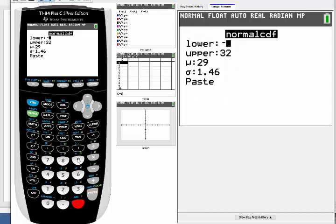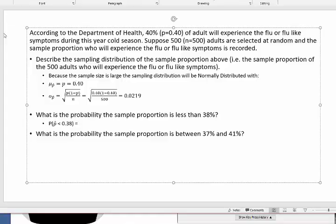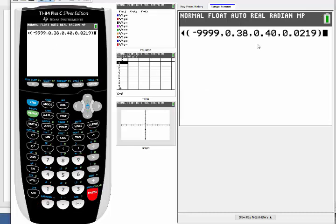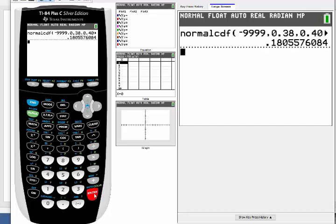So the lower here I'm going to put a ridiculous number like negative 9999. And then look back at the problem, I want it to go up to 0.38. The average here was 0.40. And the standard error was 0.0219. So if you have to plug this in by hand on the TI-83, it should look like this: lower, upper, mean, standard error.